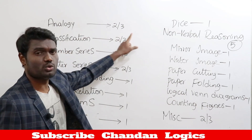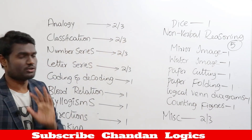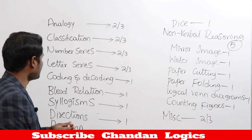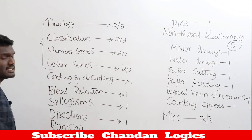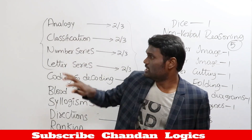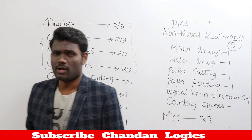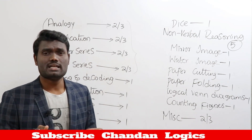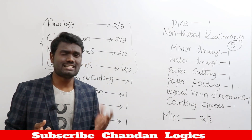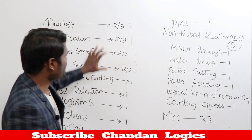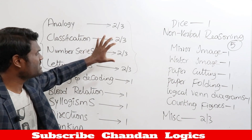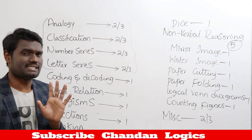From classifications you'll get two to three questions. From number series, two to three questions. From letter series, two to three questions. This area — analogies, classifications, and series — is very important for SSC examinations. You can only crack these through mock tests because the format varies: sometimes general questions, sometimes numbers, sometimes letters. Spontaneous reaction is key, and this region is a favorite of SSC examiners.